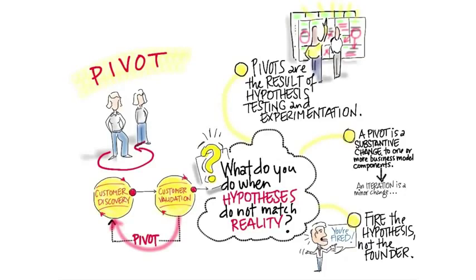Or we have the wrong partners. By the way, an iteration is a minor change to one or more of the business model components. For example, an iteration would be going from charging $9.99 to $6.99. A pivot would be a change like: our pricing is going from freemium to subscription. That's a substantive change.